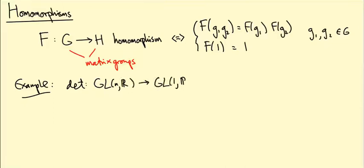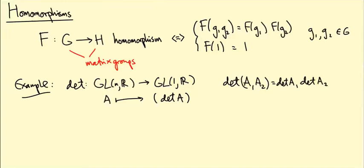The fact that this is a homomorphism is saying two things: det(A1 A2) equals det(A1) times det(A2), which is a nice formula from linear algebra, and det of the identity matrix is 1.